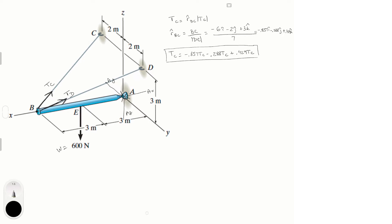Now do the same for Td, which equals the unit vector from B to D times the magnitude. The vector from B to D is (-6i + 2j + 3k) over magnitude 7 — it's the same as before except the j-component changes sign. So Td = (-0.857 Td)i + (0.288 Td)j + (0.429 Td)k.